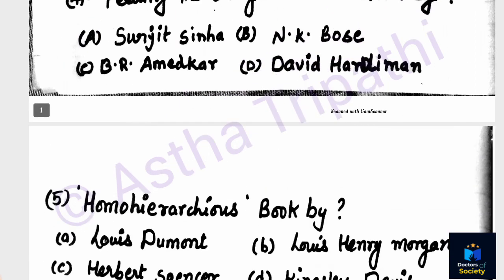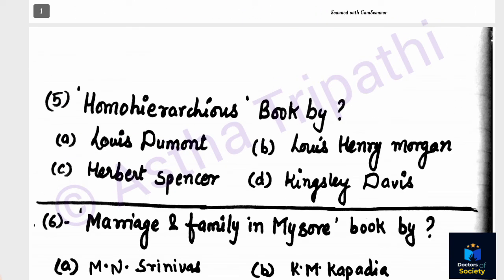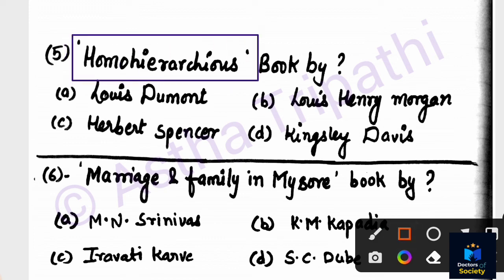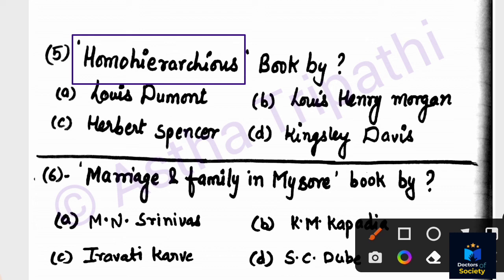Question number five: Who is the author of 'Homo Hierarchicus'? Options are Louis Dumont, Louis Henry Morgan, Herbert Spencer, Kingsley Davis. The answer is option A — Louis Dumont is the correct answer for this book.